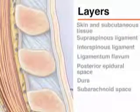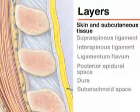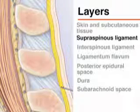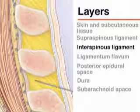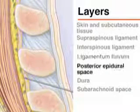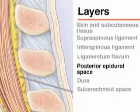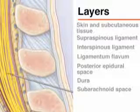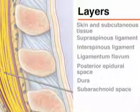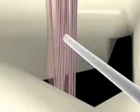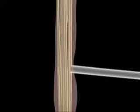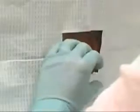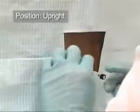If properly positioned, the needle should pass through the skin, the subcutaneous tissue, the supraspinous ligament, the interspinous ligament between the spinous processes, the ligamentum flavum, the epidural space including the internal vertebral venous plexus, the dura, the arachnoid, into the subarachnoid space, and between the nerve roots of the cauda equina. As the needle passes through the ligamentum flavum, you may feel a popping sensation. Once you have reached this point, the needle should be advanced in 2 mm increments and the stylet withdrawn after each increment to check for CSF flow.